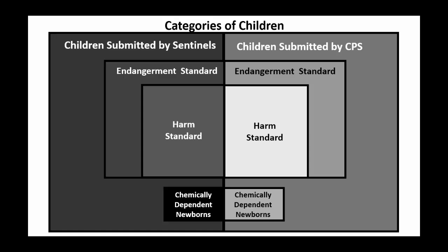Harm standard maltreatment is defined as an act or omission that results in demonstrable harm to the child. The endangerment standard is more broadly defined and encompasses the harm standard. Endangerment standard maltreatment also counts children who were not harmed if thought to be placed in a potentially harmful situation, or if a CPS investigation substantiated or indicated maltreatment. The endangerment standard also includes perpetrators other than parents for certain maltreatment subtypes. Chemically dependent newborn children with no form of countable harm or endangerment standard maltreatment after birth do not meet the NIS countability criteria.